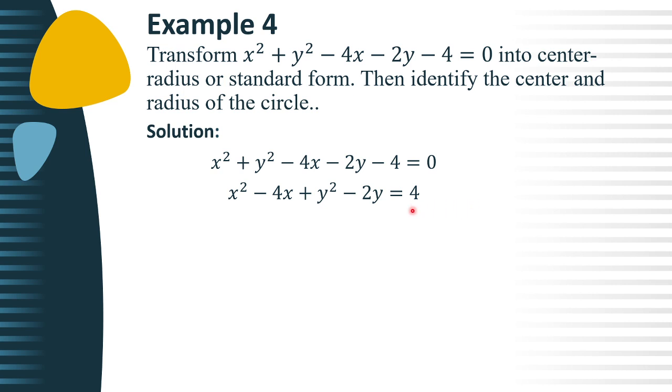Okay, next, complete the square for both groupings. So, by using the completing the square, we have negative 4 divided by 2, that's negative 2, then square, we have positive 4. Then, for negative 2y, negative 2 divided by 2, that is negative 1, then square, we have positive 1.